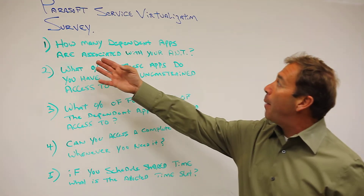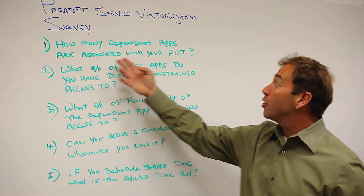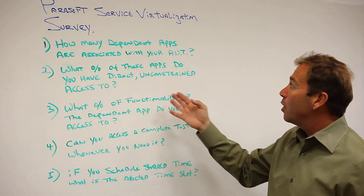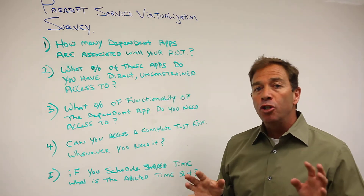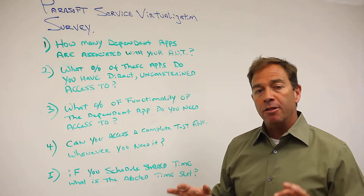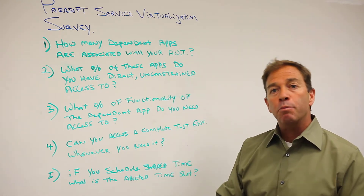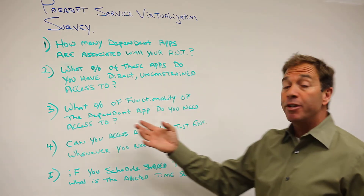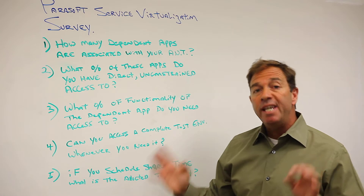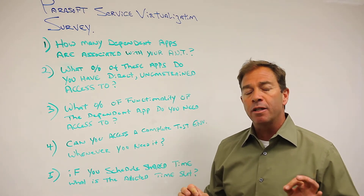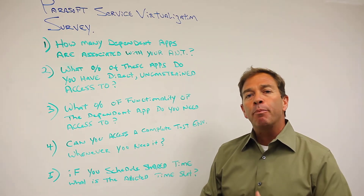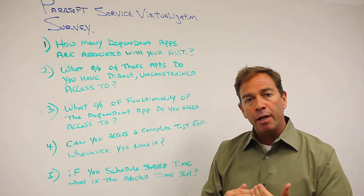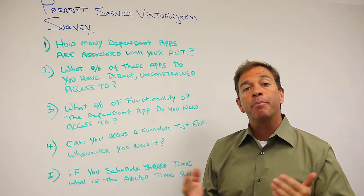The survey questions are: How many dependent apps are traditionally associated with your application under test? What percentage of these apps do you have direct and unconstrained access to? This includes third-party apps, perhaps mainframes. What percentage of functionality of the dependent applications do you need access to in order to test? What we're trying to get at here is the percentage of the dependent application that you actually utilize.